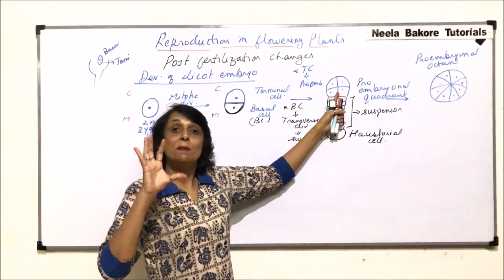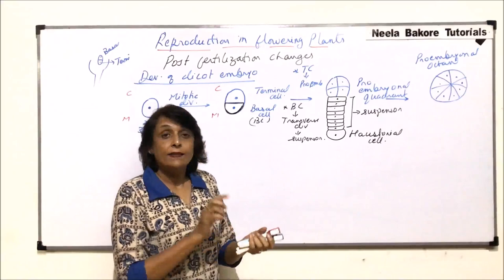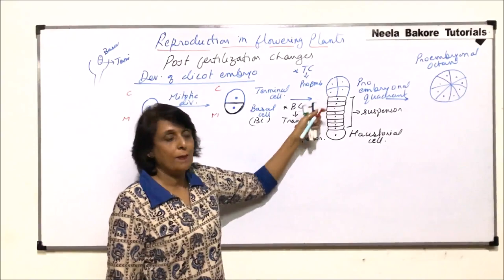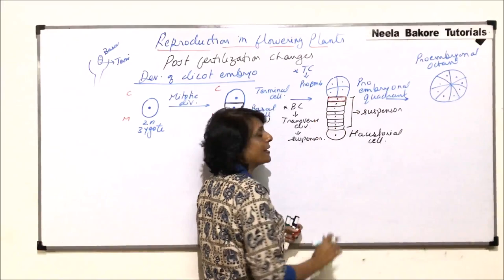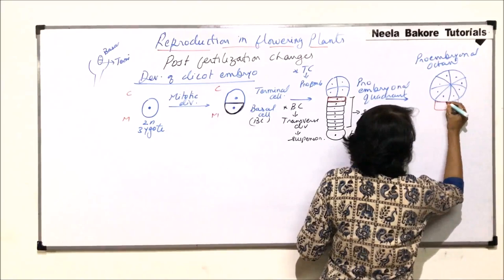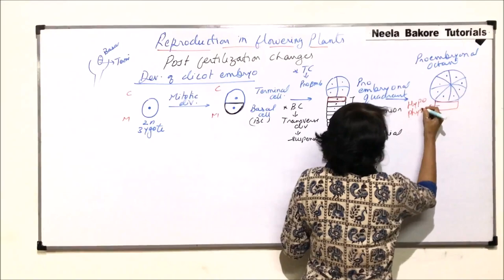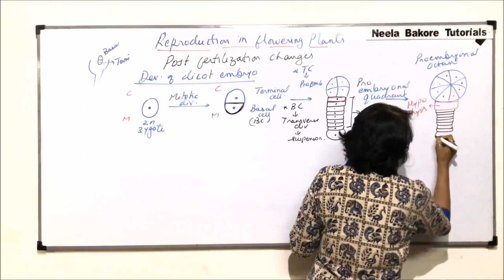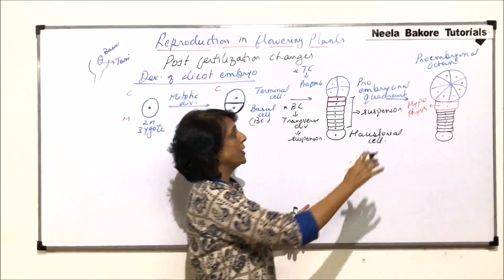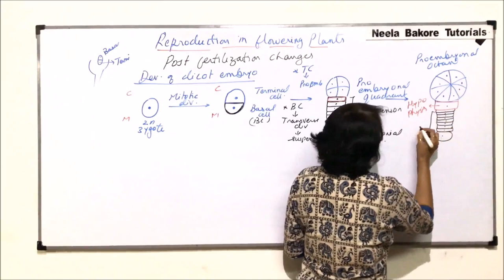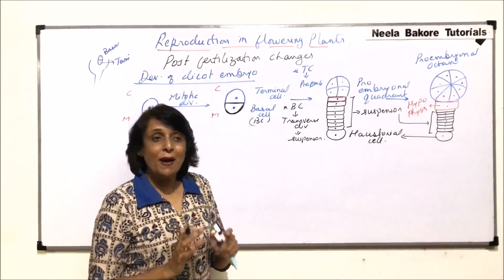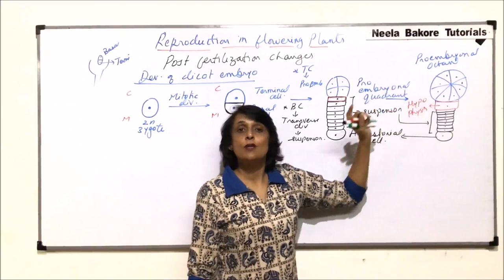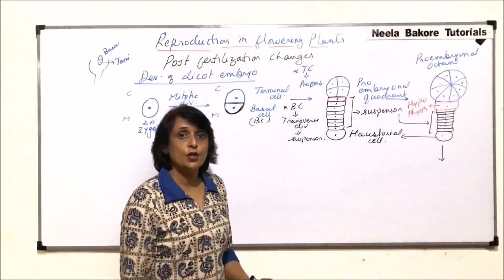The suspensor remains as it is, but as the proembryo becomes bigger, the suspensor comparatively starts to look smaller. The cell of the suspensor which is in contact with the proembryo acts as the hypophysis. The other part of the suspensor remains the same. We draw all cells of the suspensor and the haustorial cell. There is now a proembryonal octant, a hypophysis, the suspensor, and the haustorial cell.